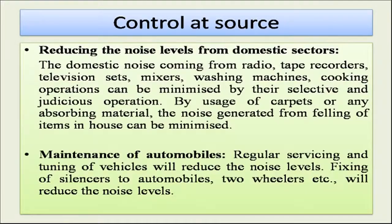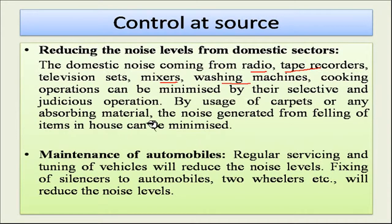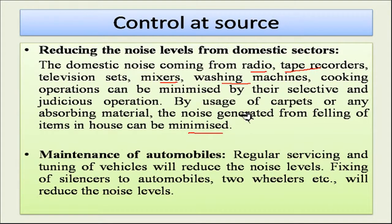Control at source means reducing noise levels from domestic sectors. For example, domestic noise coming from radio, tape recorders, television sets, mixers, washing machines, and cooking operations can be minimized by their selective and judicious operation. By usage of carpets or absorbing material, noise generated from falling items in the house can be minimized. You can also do the maintenance of automobiles as another way of controlling noise at the source.